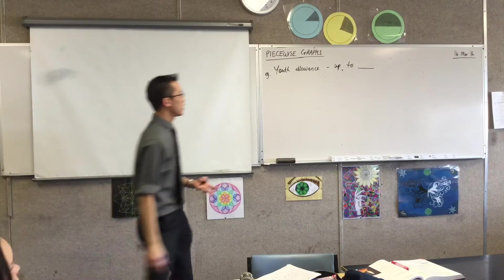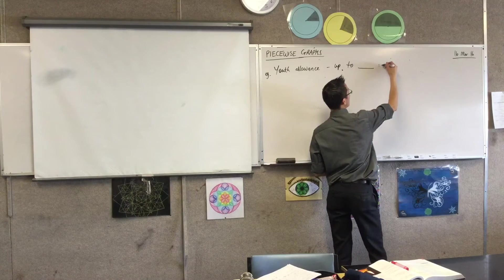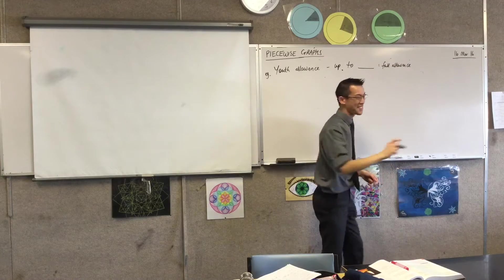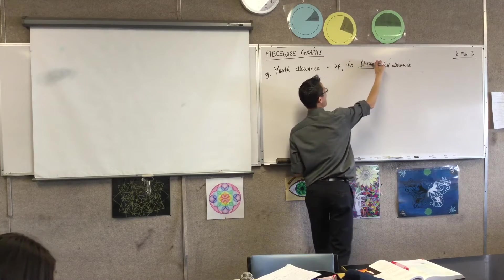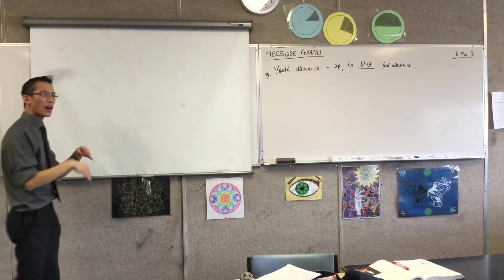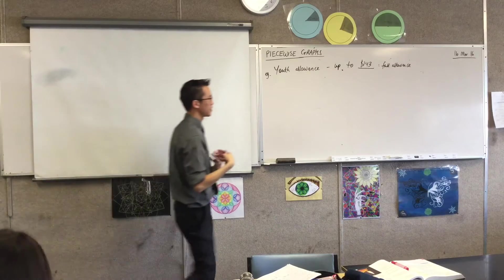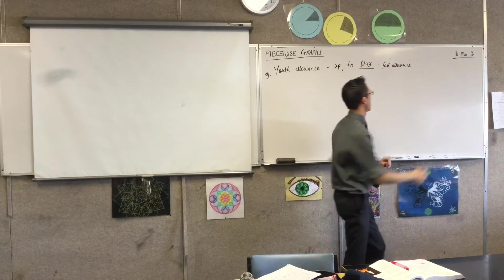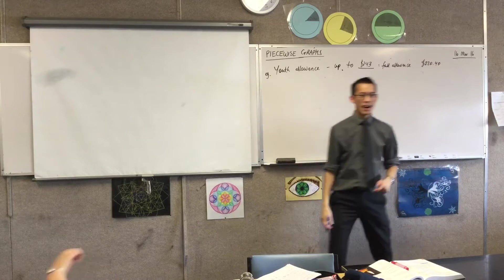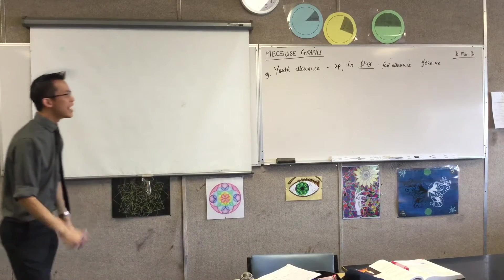Up to a certain amount, you get a full allowance. So, if you are earning money, like just with a casual job, and if you earn $143 or less, you get the full allowance. Now, from memory, I think that's $220.40. I just spend a lot of time looking at these numbers.